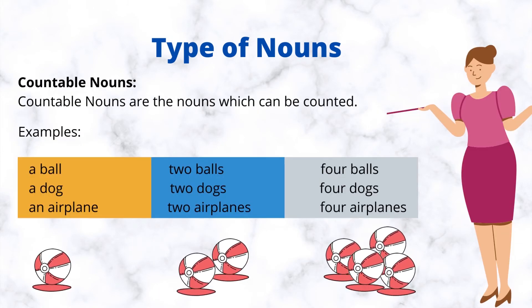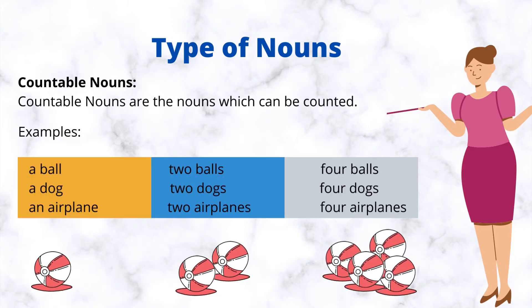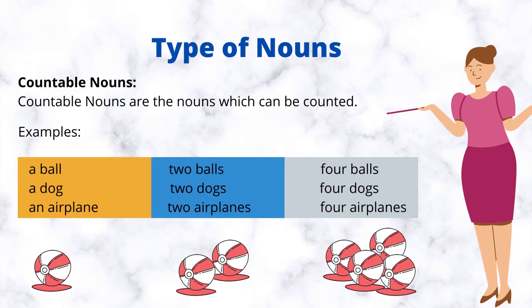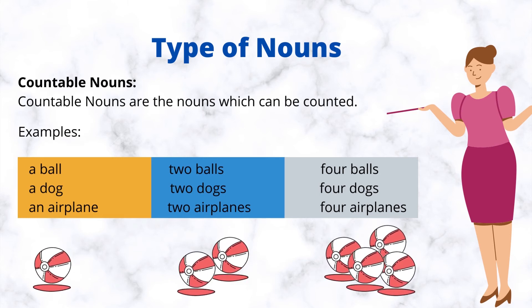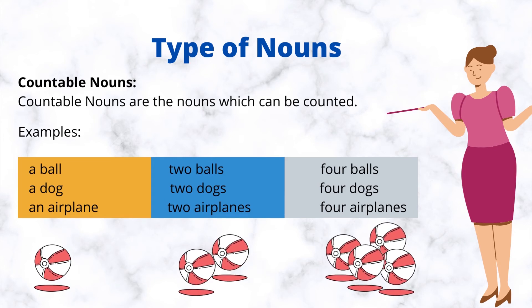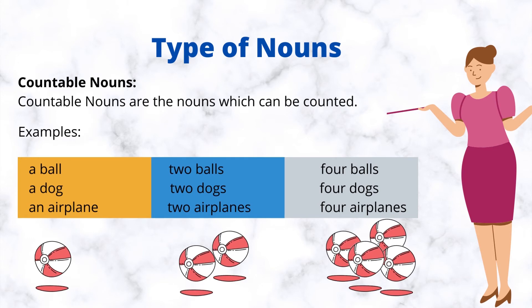Countable nouns are the nouns which can be counted. Examples: a ball, two balls, four balls. A dog, two dogs, four dogs. An airplane, two airplanes, four airplanes.